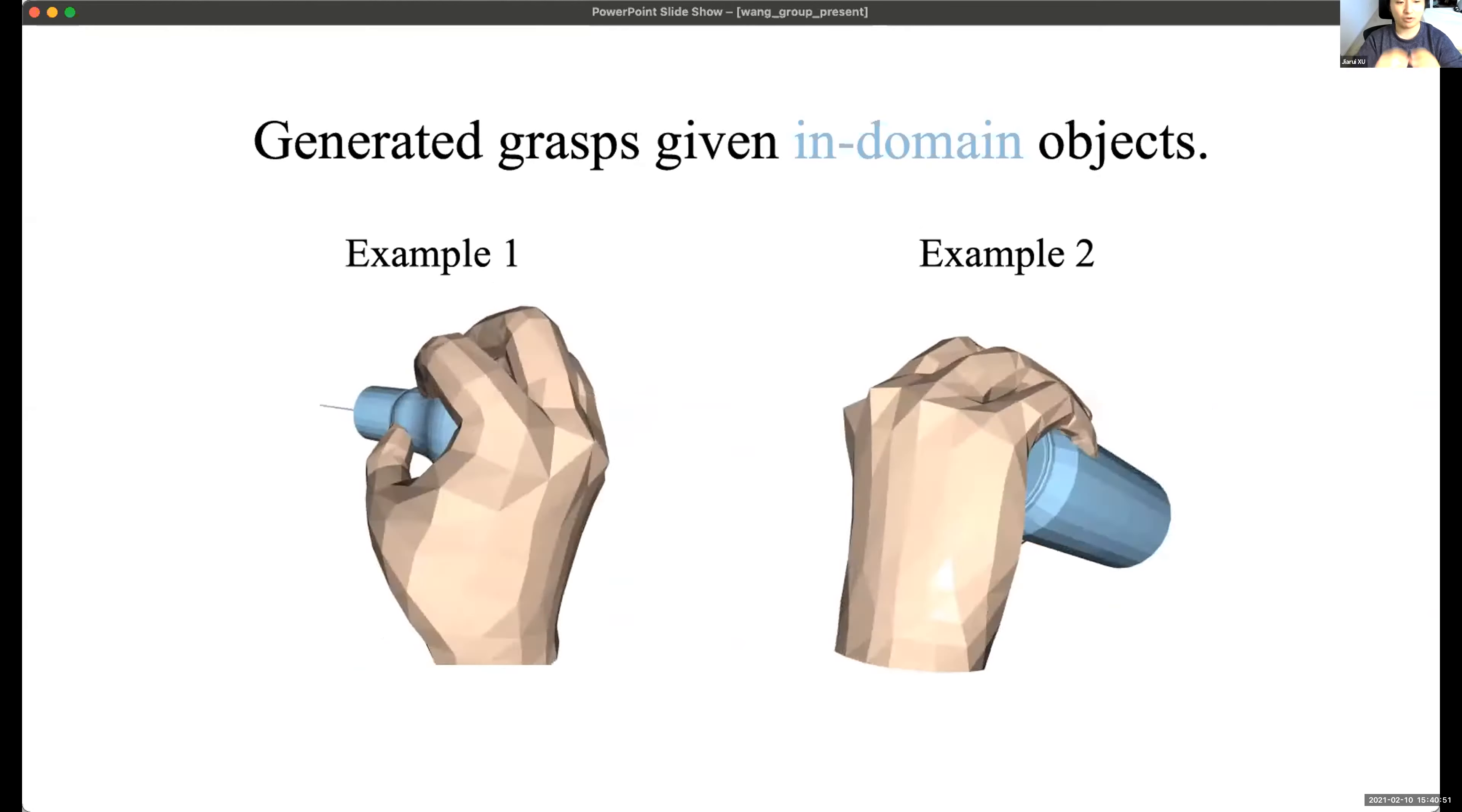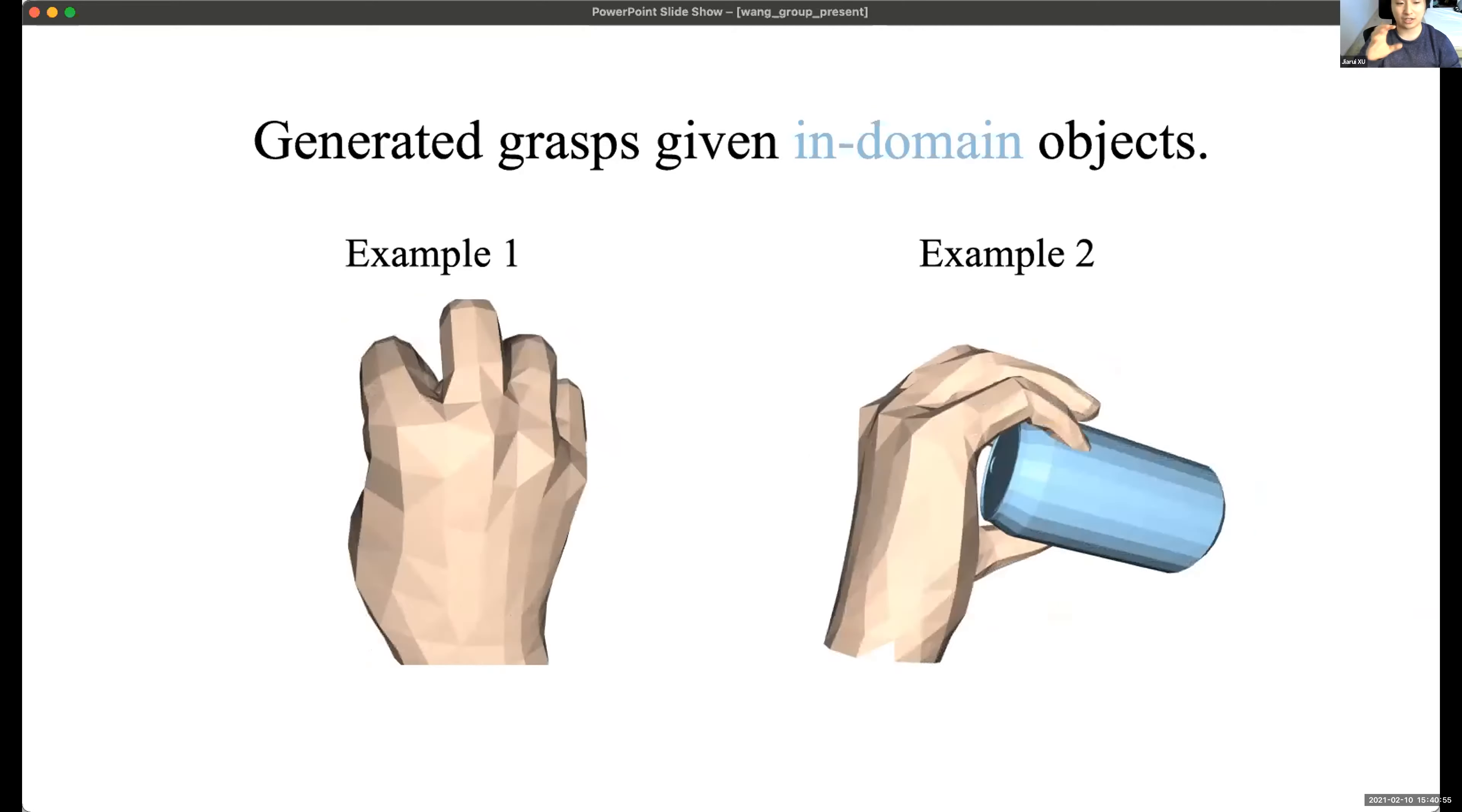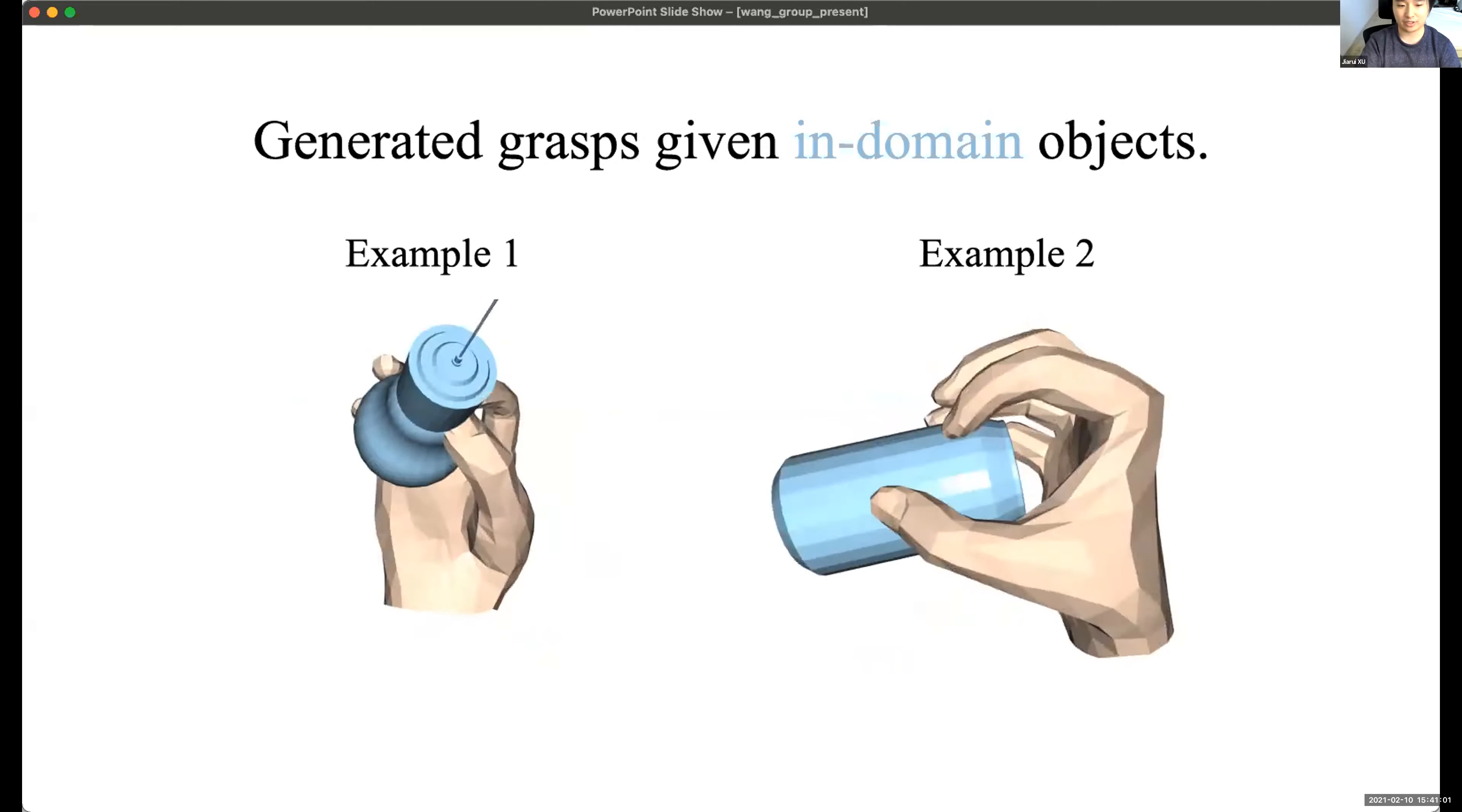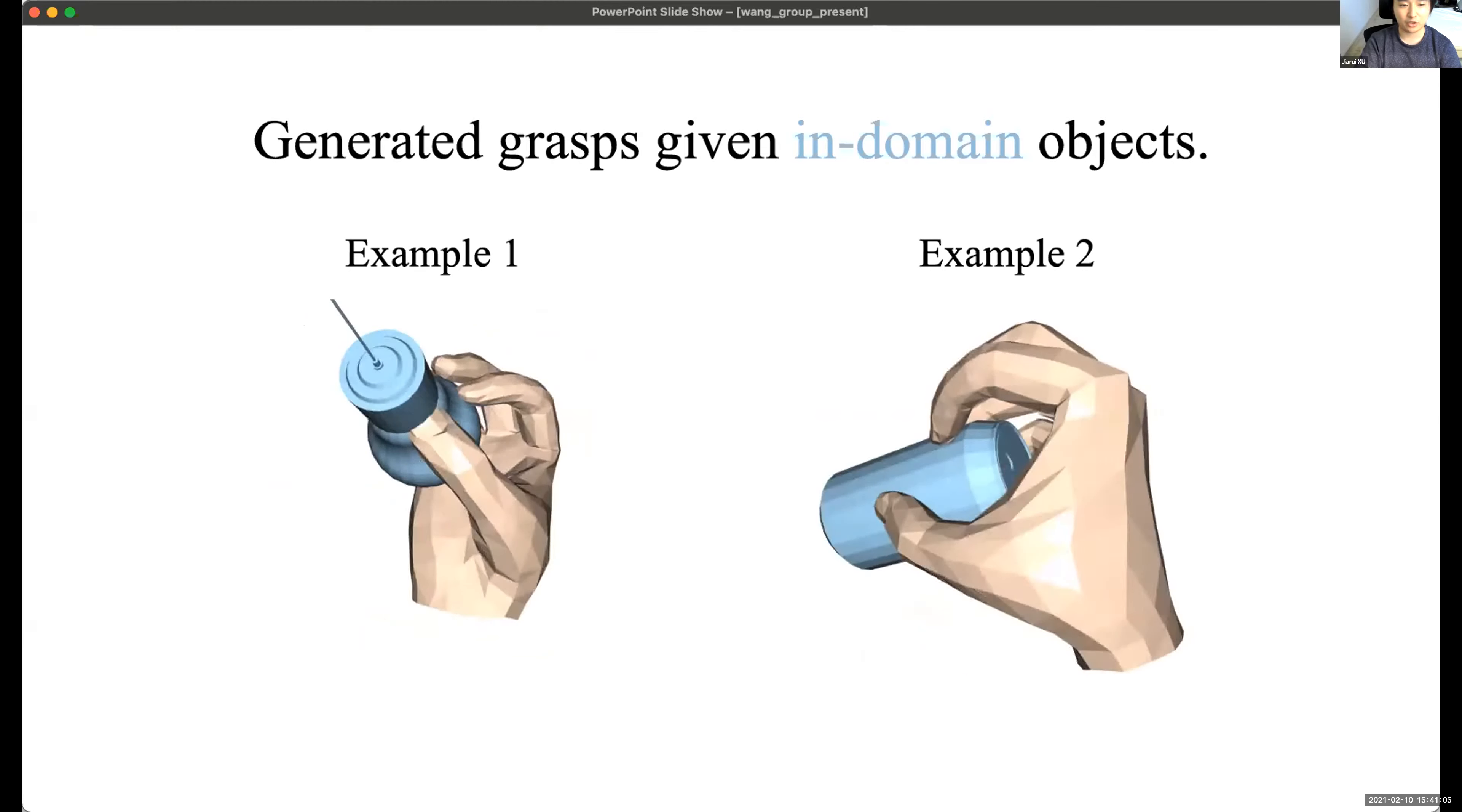And for example, for a mug, we can generate a pose to grab it in a round manner. And for a can, we generally generate another pose to grasp the can. And this is for in-domain objects.